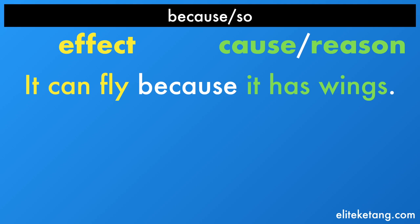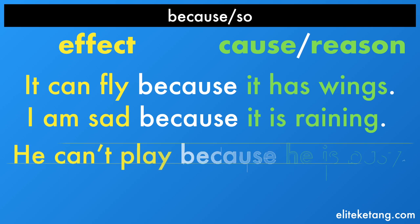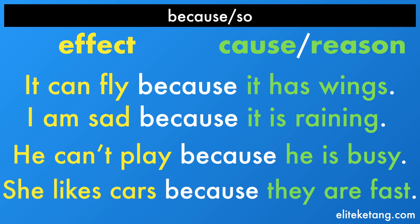It can fly because it has wings. I am sad because it is raining. He can't play because he is busy. She likes cars because they are fast. In all of these sentences, the reason or the cause comes after because.